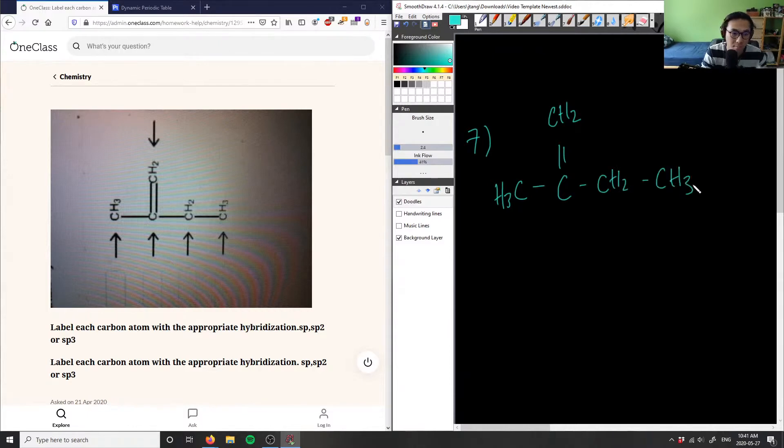CH2 CH3 here, so I want to label all these carbons. We know that for alkanes specifically, alkanes are hybridized in sp3, right? Alkanes meaning they're single bonded together, so this guy here has to be sp3, this guy here is sp3.